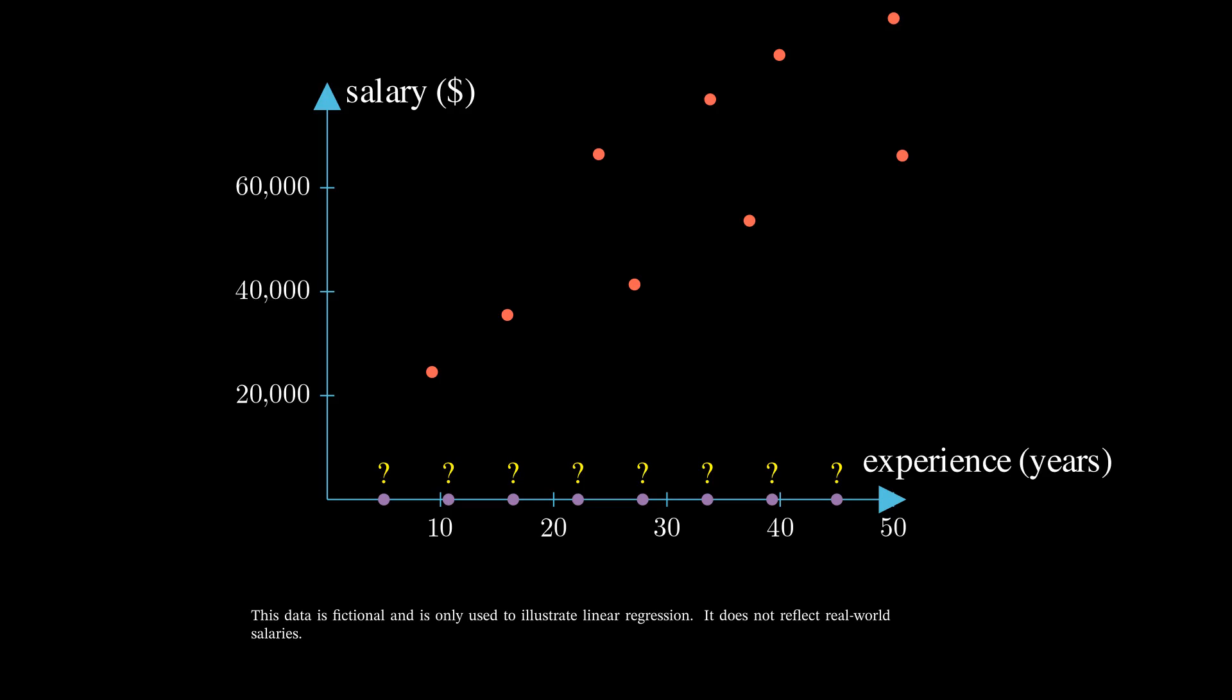Fortunately, linear regression comes to the rescue. It fits a straight line through your data, and then we can estimate salaries by moving each point along the vertical axis until it meets this line. This sounds like good news, but what exactly does it mean to fit a line?